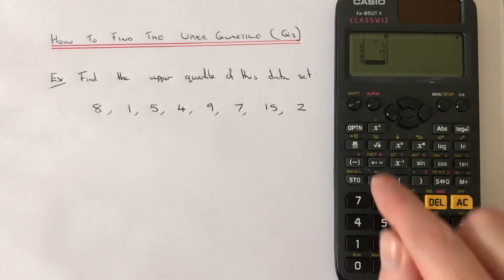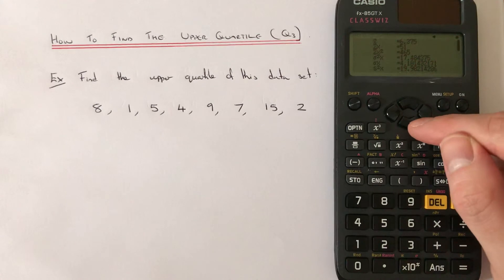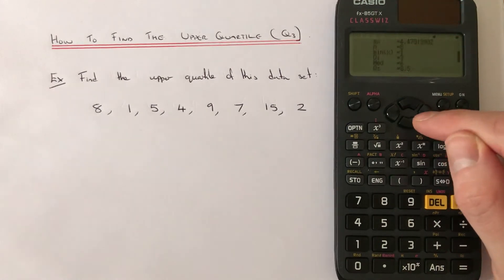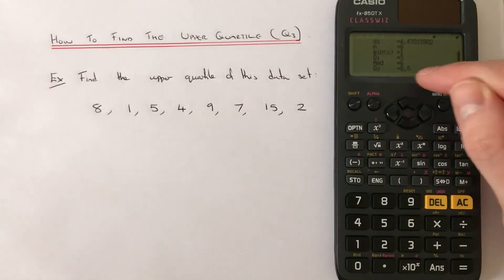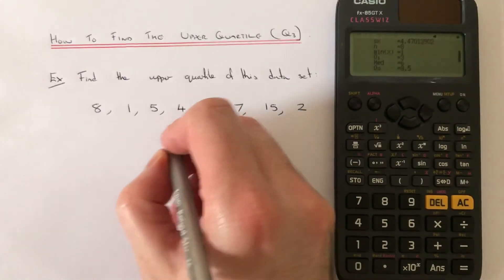So once we've typed these in, press option and number 3, and we get all sorts of statistics. And the one we're interested in is on the second page, which is Q3. So that represents the upper quartile, and that is 8.5.